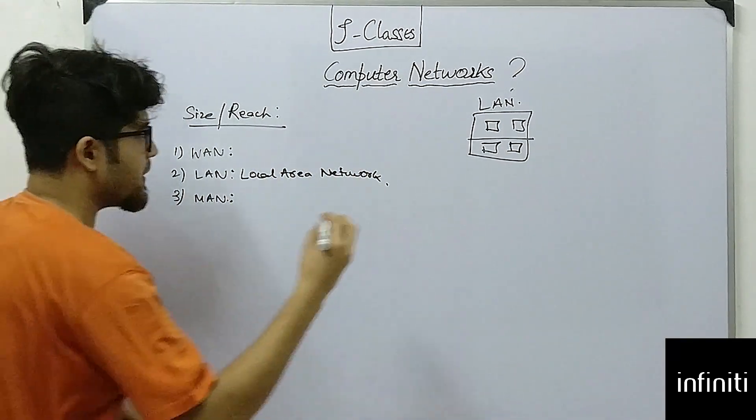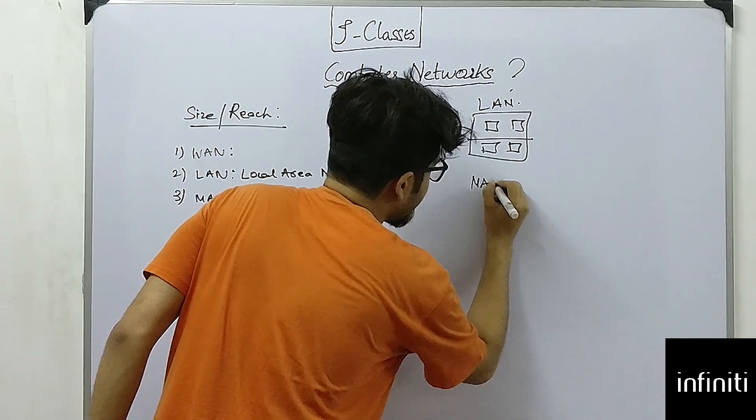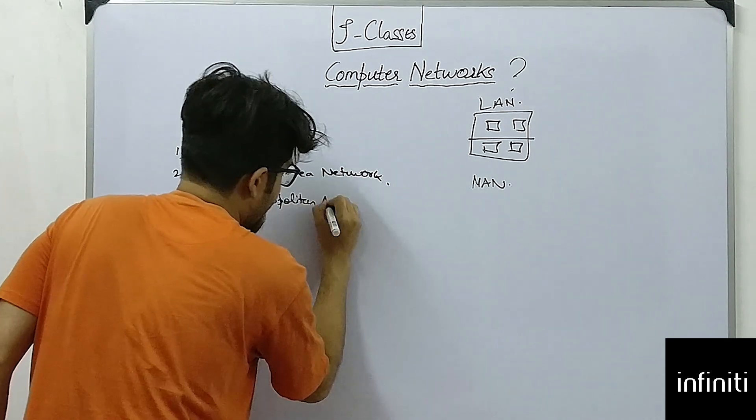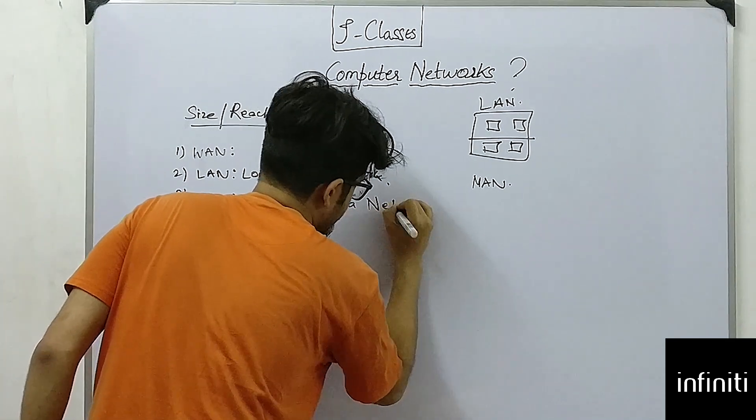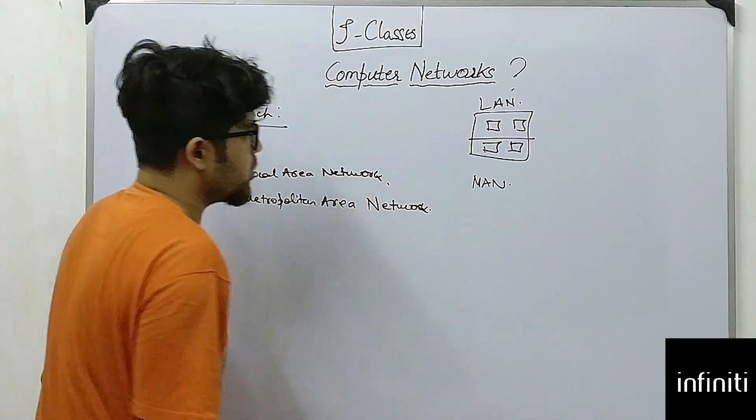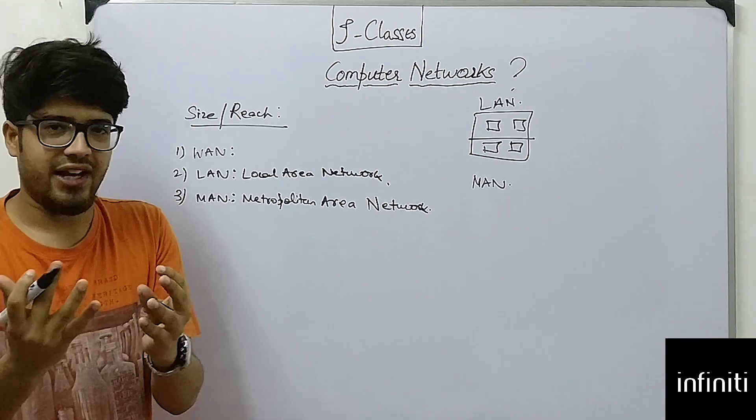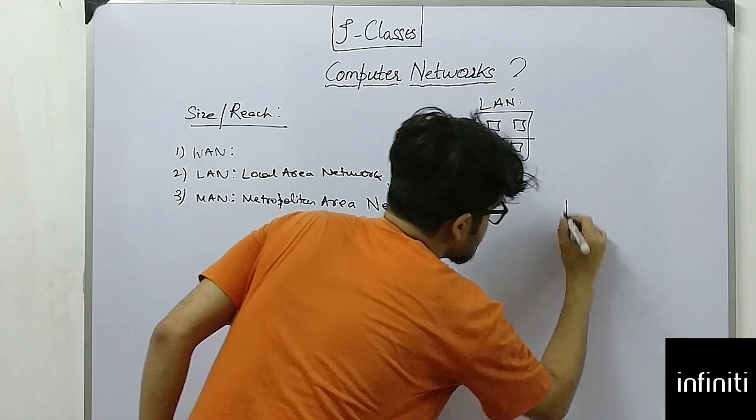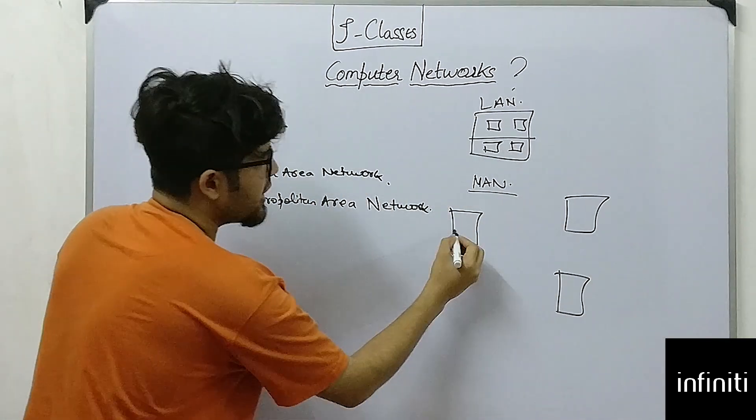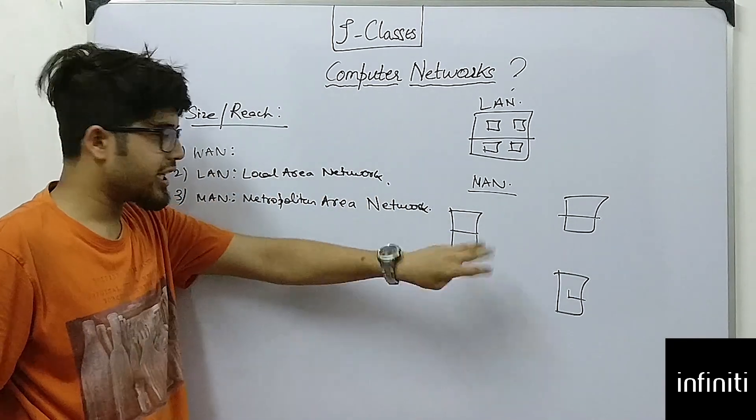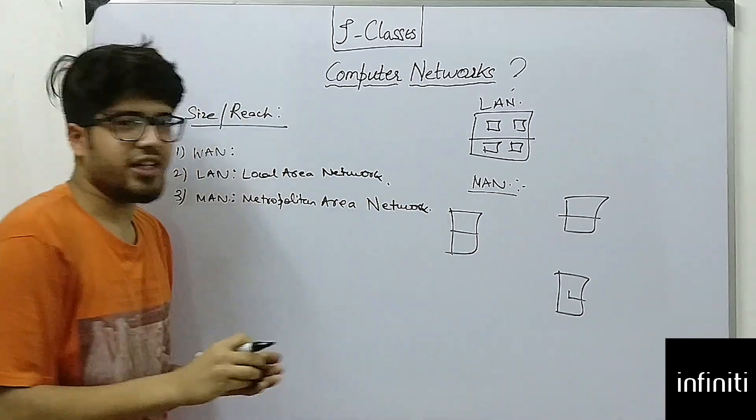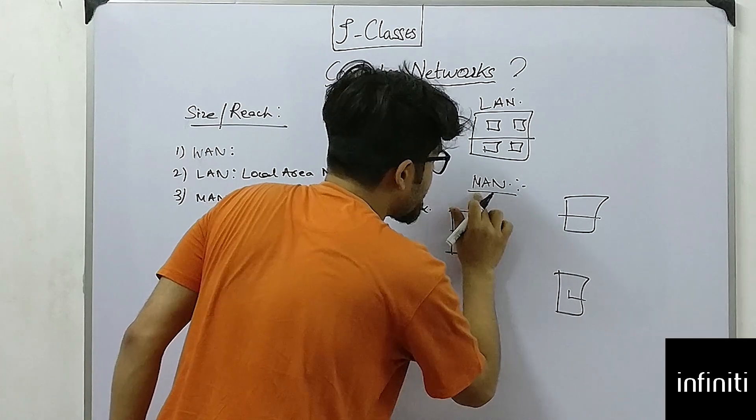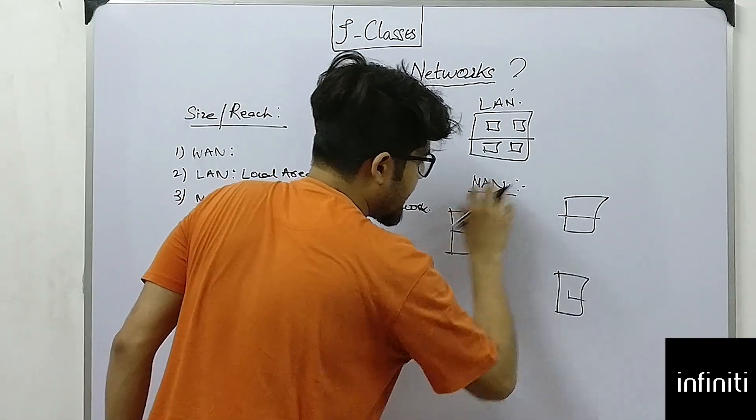Now we are going to study about metropolitan area network. These are just simple collections of LANs. In a city we use MAN—like this one connection, this one connection, and this one connection. So these are different LANs which are connected to each other, and it is spread over a distance of a city, of a large area. So this is called metropolitan area network because it's the network in a city.